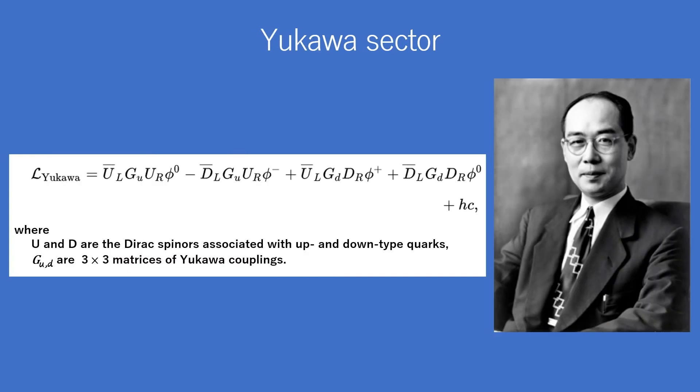The Yukawa interaction terms are given, where U and D are the Dirac spinors associated with up- and down-type quarks, and G_U, G_D are 3×3 matrices of Yukawa couplings.